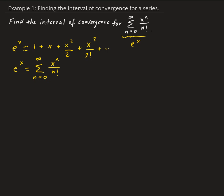To find the solution, we're going to use the ratio test for a series. We take the limit as n approaches infinity of a sub n plus 1 divided by a sub n. This is the ratio test.